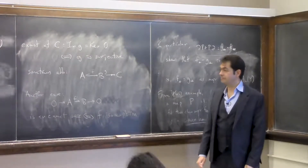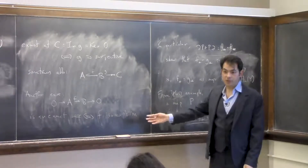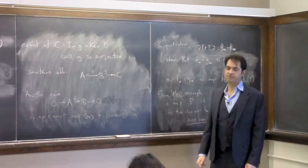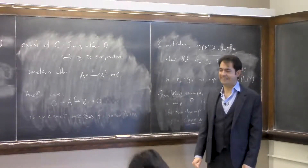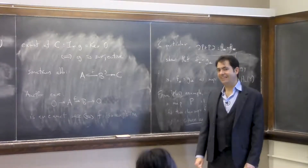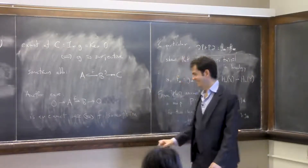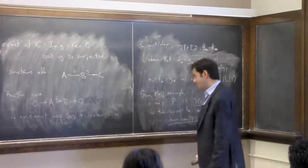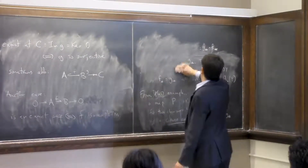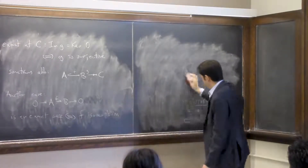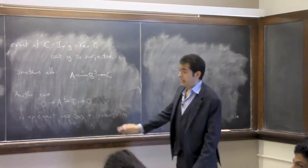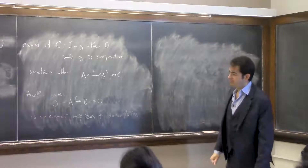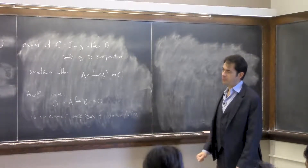Cohomology is the dual theory to homology — you take the dual complex and then take cohomology. A long exact sequence isn't much different; it's just a longer exact sequence. When we say 'long exact sequence in homology,' it means something that looks like what we're about to write down.